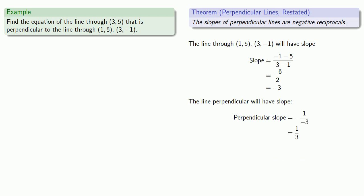So I know the line will have slope one-third and go through the point (3, 5). So its equation will be y - 5 = 1/3(x - 3). And again, we can leave it in this form until we have to do something with it.